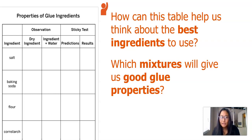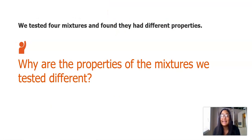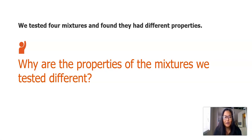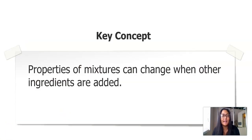Which mixtures will give us good glue properties? We can use this table to remember which mixtures made good glue properties, whether from our sticky test or when we observed it with water. We tested four mixtures and found they had different properties. Why are the properties different? Because there were four different ingredients — each had a unique property. For example, the salt was very grainy, the flour was very powdery, and the cornstarch might have been fluffy. Properties of a mixture can change when other ingredients are added.